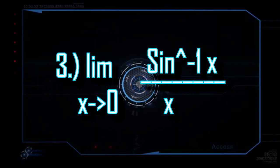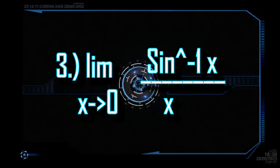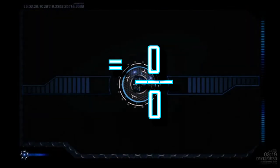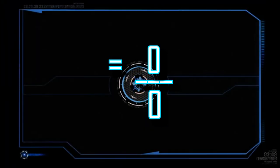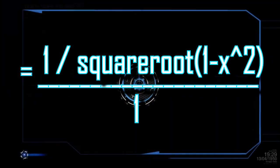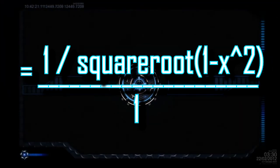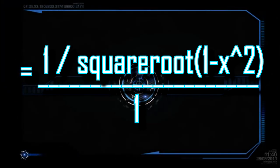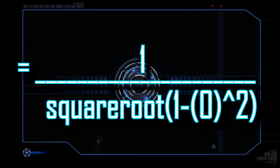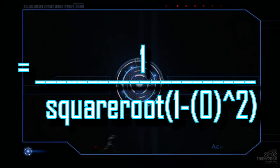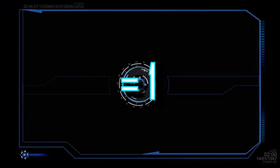Let's move on to the third exercise. The given is the limit of arcsin(x) over x as x approaches 0. When we substitute 0, we will get 0 over 0. So we use L'Hôpital's rule, taking the derivative of arcsin(x) and the derivative of the denominator, which is equal to 1. We can now substitute 0 into 1 over the square root of 1 minus x squared. Finally, the answer is 1.